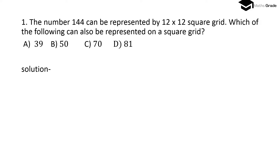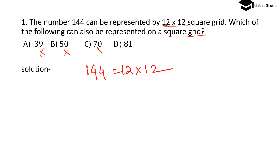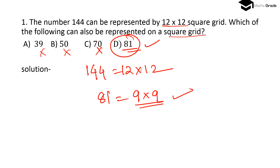Question number 1: The number 144 can be represented by a 12 multiplied with 12 square grid. Which of the following can also be represented on a square grid? We know 144 is 12 × 12. Checking the options: 39 is not a perfect square, 50 is not a perfect square, 70 is not a perfect square, but 81 is 9 × 9, which is a perfect square. So option D, 81, is the correct answer.